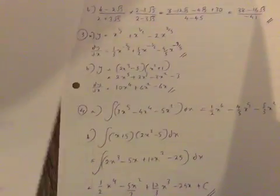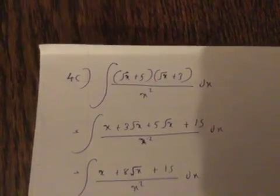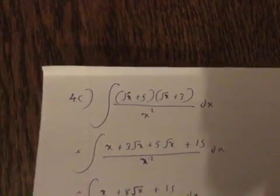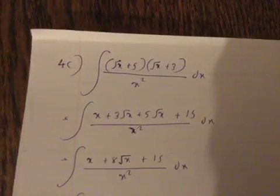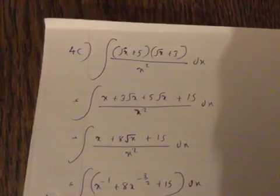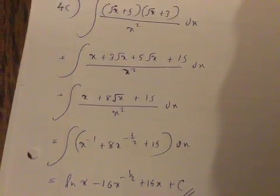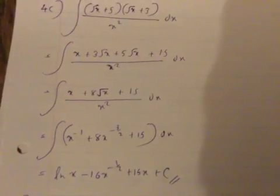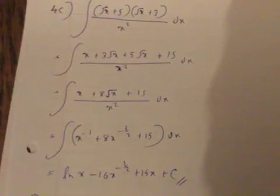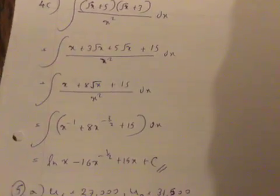Question 4c: integral of (√x + 5)(√x + 3) over x² dx. Opening the brackets gives x + 3√x + 5√x + 15 over x², which simplifies to x + 8√x + 15 all over x². That is integral of x⁻¹ + 8x^(-3/2) + 15 dx. Note: x⁻¹ integration gives ln x, which is not part of C1, so you can ignore that part. The rest gives minus 16x^(-1/2) plus 15x plus c.